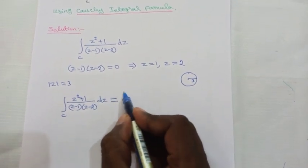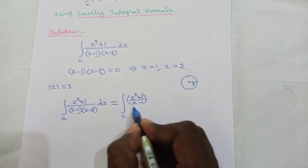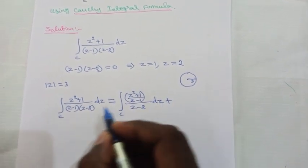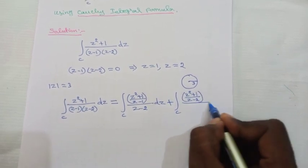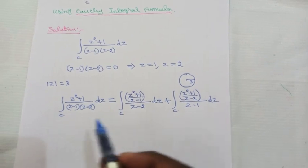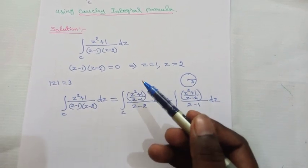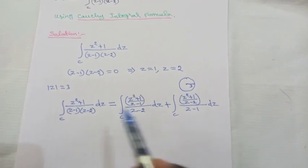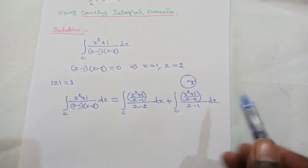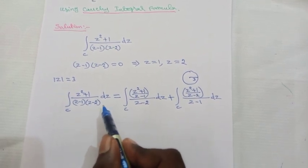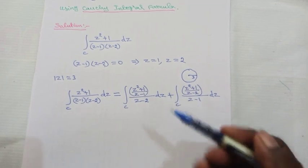We split by taking one factor at a time in the denominator: ∫_c (z² + 1) / [(z - 1)(z - 2)] dz = ∫_c [(z² + 1)/(z - 1)] / (z - 2) dz + ∫_c [(z² + 1)/(z - 2)] / (z - 1) dz. This is the procedure: if three singular points lie inside, you get three separate integrals, one for each term.